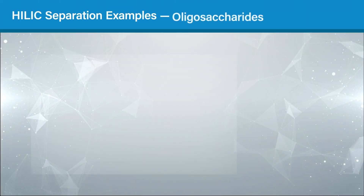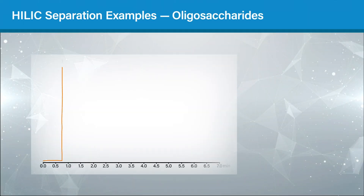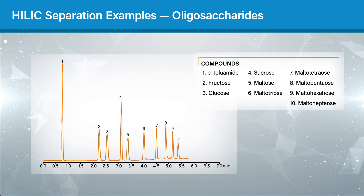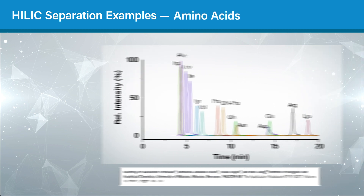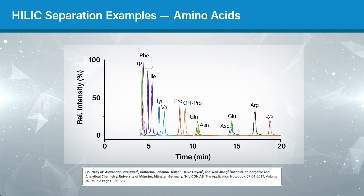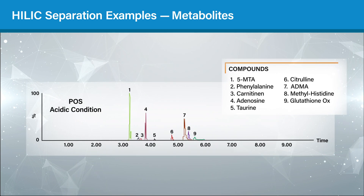Here are just a few HILIC separation examples. HILIC chromatography is successfully used in laboratories today for the retention and separation of things like sugars or other oligosaccharides, amino acids, and various polar metabolites.